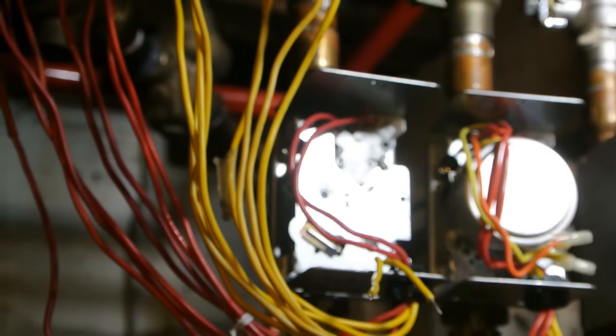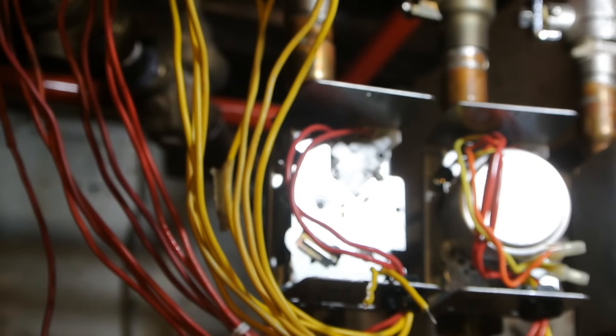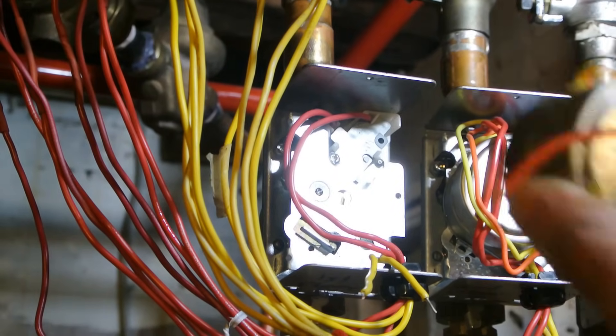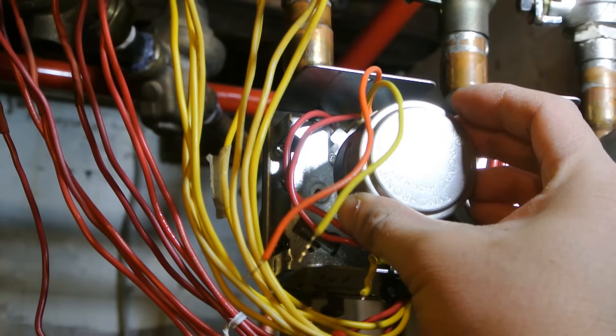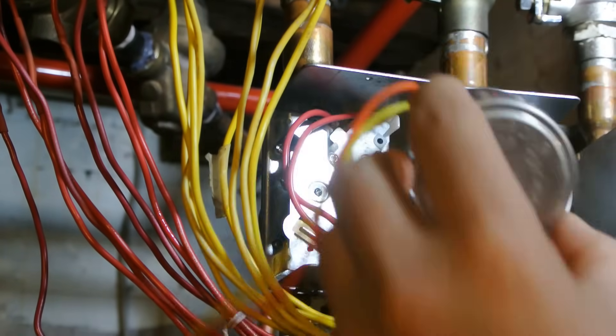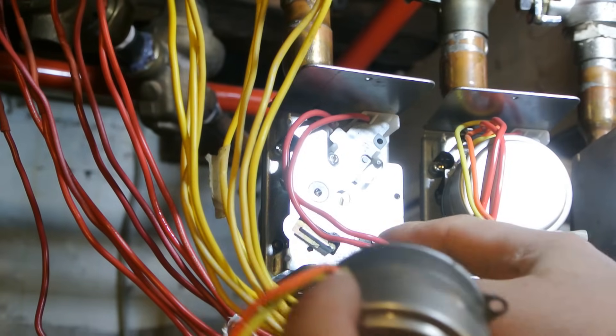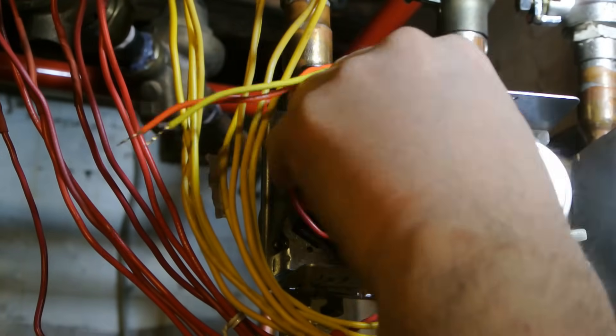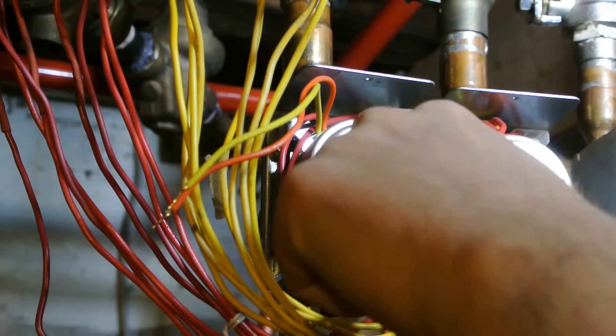We're going to put the new zone valve back on. What we're going to do is line up the gear with that hole. And then we're just going to twist it in place. And that's it.